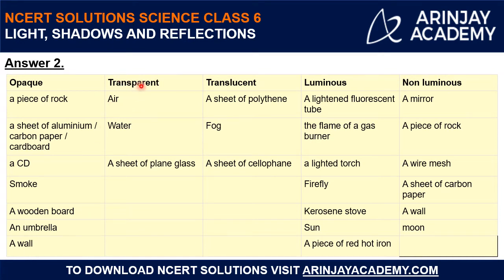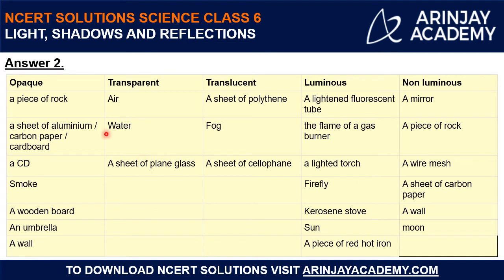The second category is transparent. Here comes air — you can see through air because it allows light to pass through it. Then water — you can again see through water. Then a sheet of plain glass. If you have a glass slab, you can see through it — it is a transparent material.